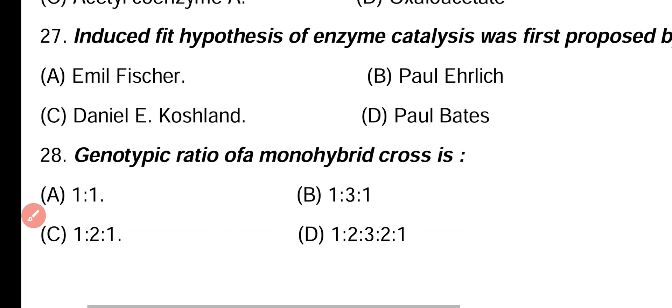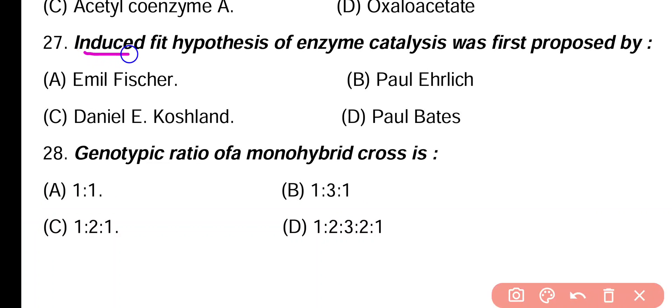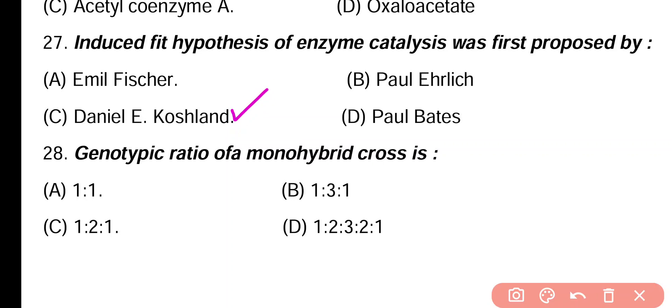Question 27. The induced fit hypothesis of enzyme catalysis was first proposed by: Emil Fisher, Paul Ehrlich, Daniel Koshland, Paul Betts. Correct answer is option C. Koshland proposed the induced fit model of enzyme action in 1959.